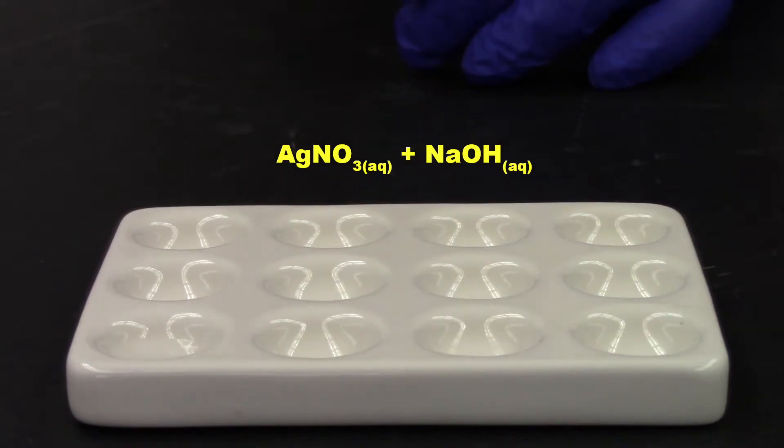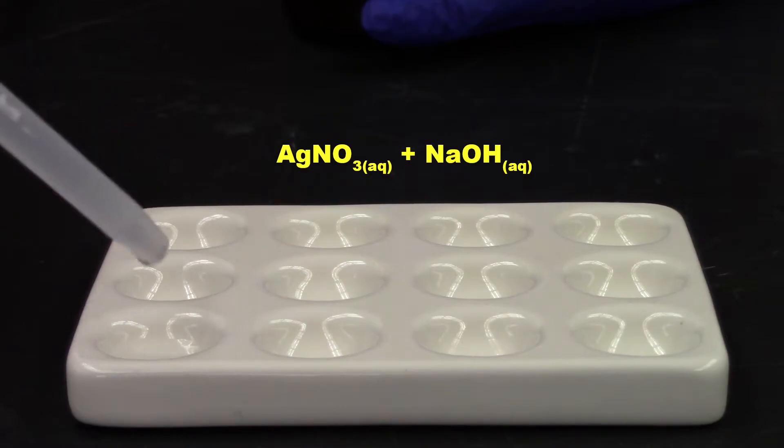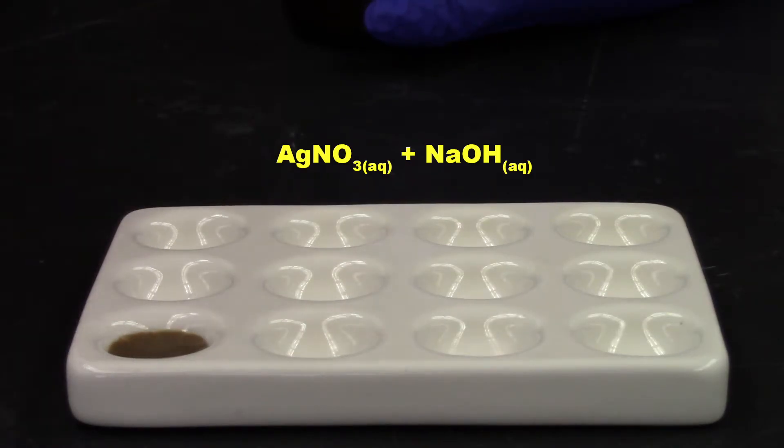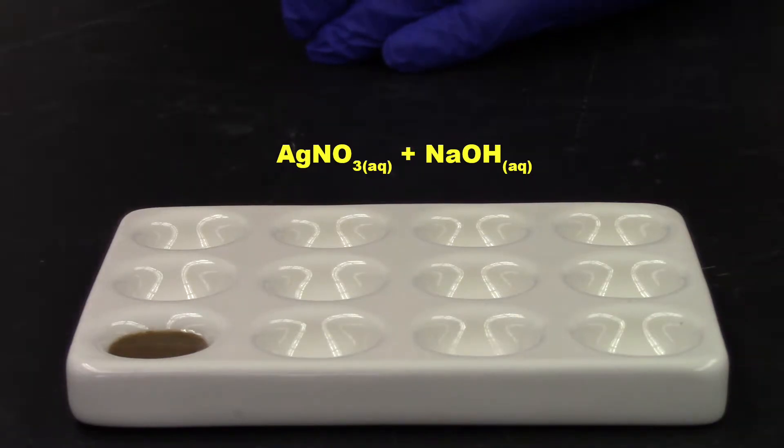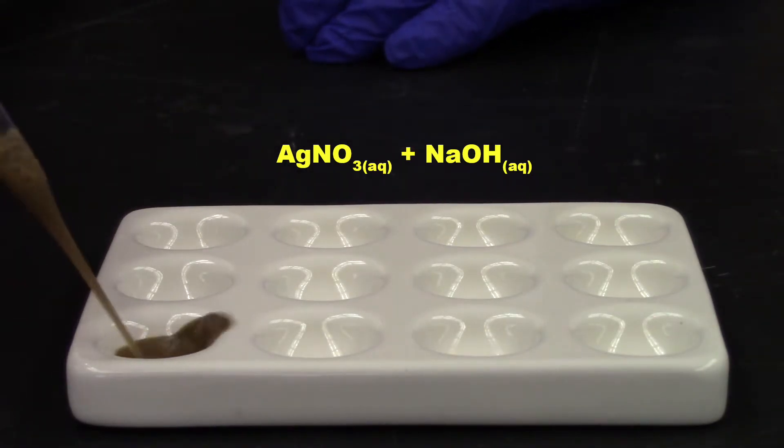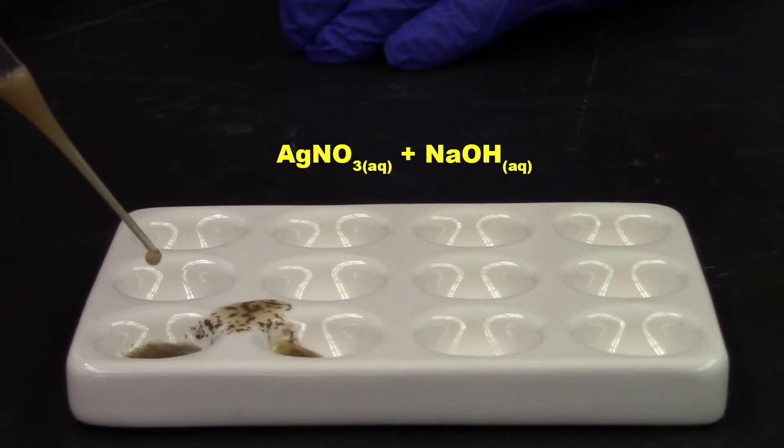And we'll add a little bit of sodium hydroxide. Now notice these are both clear, colorless liquids. And when I add them together, you get this. Let me mix them up a little bit. Whoops. Didn't mean for that to happen. But as you can see, you get a brown precipitate.